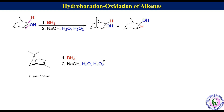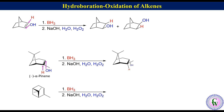Hydroboration oxidation of minus alpha-pinene: in this case the alkenic carbons are different. OH will attack on the less substituted carbon while H attacks the more substituted one. There are two faces for the attack, but the top face is sterically hindered, so attack will preferentially occur from the less hindered bottom face to produce the endo-alcohol as the major product. Sometimes in books or question papers the top view of minus alpha-pinene is given, in which case the product structure can be drawn accordingly.